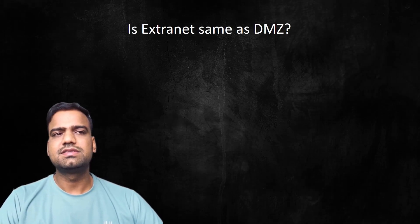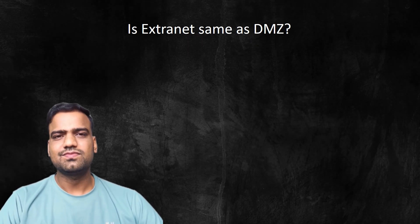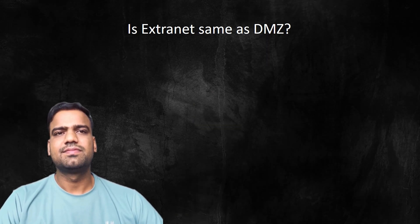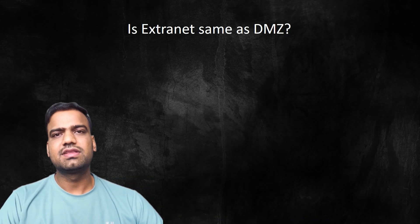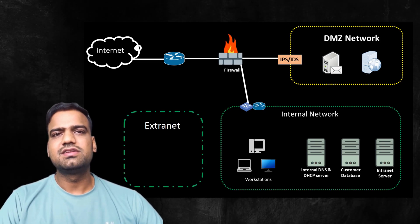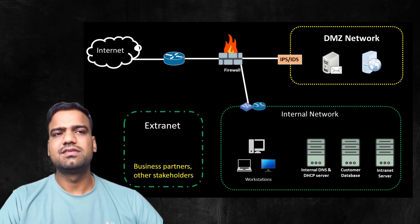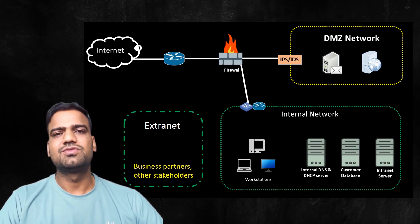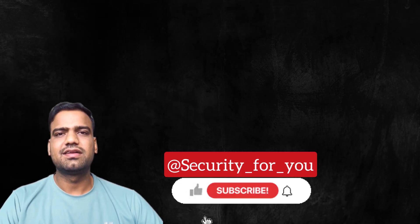So that was about Demilitarized Zones in network security. A question for you: is an extranet the same as a DMZ? The answer is no — extranet and DMZ are not the same. An extranet is a private network that allows controlled access to external users such as business partners or customers. Typically, extranets are used to share internal resources with external partners in a secure manner. It is like an extension of a company's network for key stakeholders outside the organization.